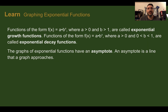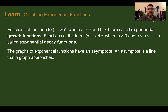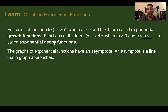Let's learn: Graphing exponential functions. Functions of the form f(x) equals a times b to the x, where a is greater than zero and b is greater than one, are called exponential growth functions. Functions in that same form where a is greater than zero but b is between zero and one — a decimal or fraction less than one — are going to be your decay functions. If it's growing, your total keeps getting larger and larger, whereas if it's decaying, your total keeps getting smaller and smaller, both by a factor you're multiplying by.